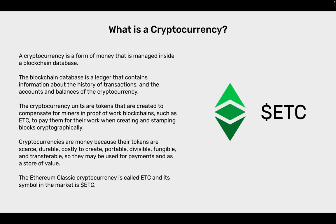What is a cryptocurrency? A cryptocurrency is a form of money that is managed inside a blockchain database. The blockchain database is a ledger that contains information about the history of transactions and the accounts and balances of the cryptocurrency. The cryptocurrency units are tokens that are created to compensate miners in proof-of-work blockchains such as ETC, to pay them for their work when creating and stamping blocks cryptographically. Cryptocurrencies are money because their tokens are scarce, durable, costly to create, portable, divisible, fungible, and transferable, so they may be used for payments and as a store of value. The Ethereum Classic cryptocurrency is called ETC and its symbol in the market is $ETC.